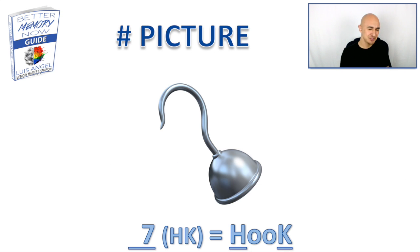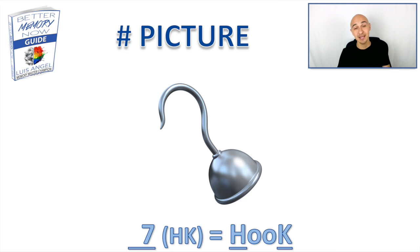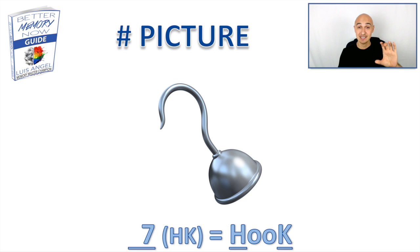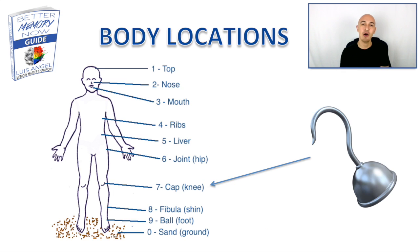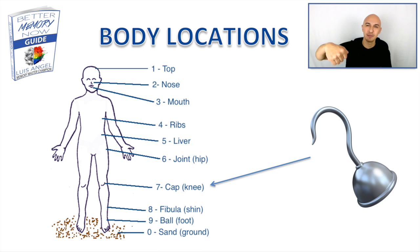Number seven is hook. The seven kind of looks like a hook — that's an extra trigger. The consonant sound for seven is a CH sound, and with the H and a few vowels you get hook. Picture that on your kneecap. Maybe that hook is lifting up your kneecap.